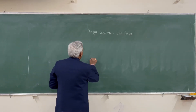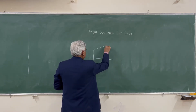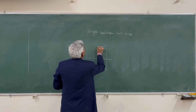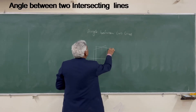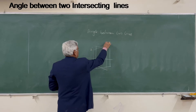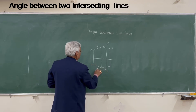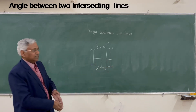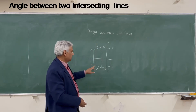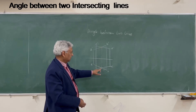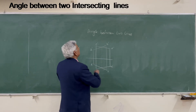Let us say you have two intersecting lines A, B and C. These are intersecting lines. I told you in my last session that when the intersection point of elevation and the intersection point of the plan lie on the same projector, the lines are intersecting. The angle between these two lines is basically this angle.